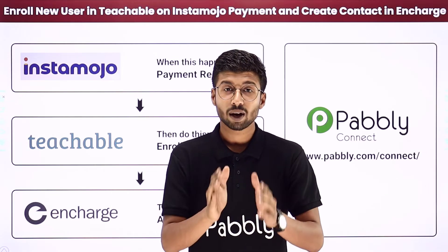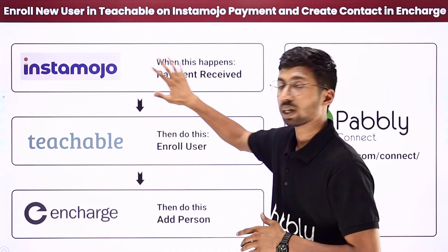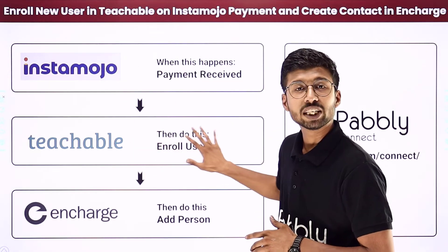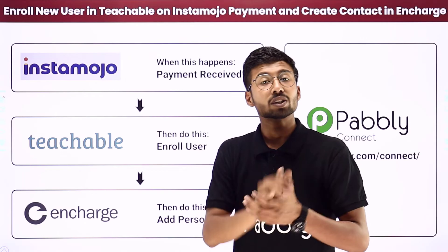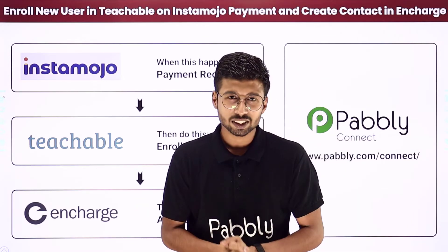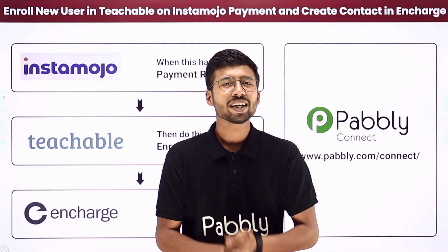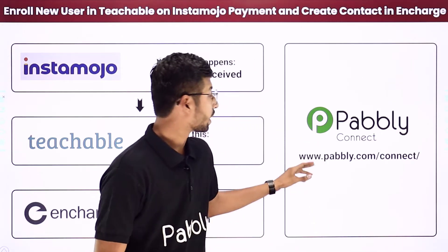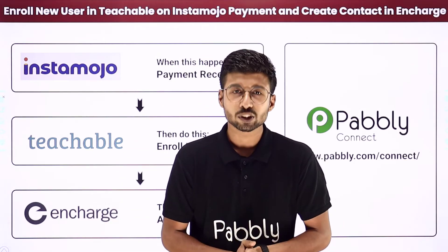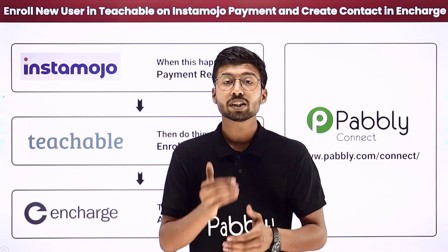To solve this problem, I came up with an awesome automation: whenever we receive a payment on our Instamojo account, automatically the same customer will be enrolled in our Teachable course, and the same person will also be added in our InCharge CRM as a person. To make this happen, we will be using Pably Connect, which is an automation and integration software.